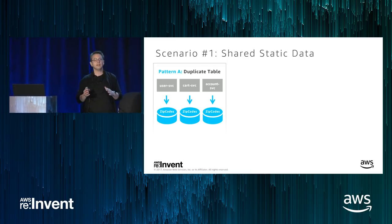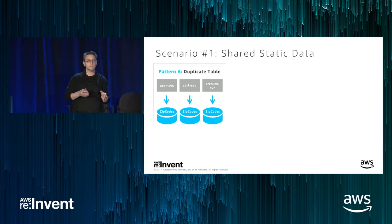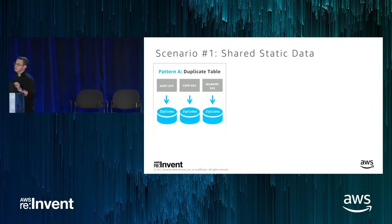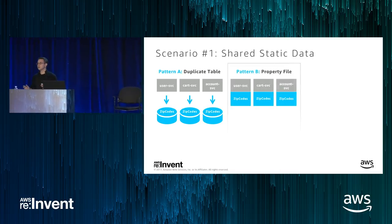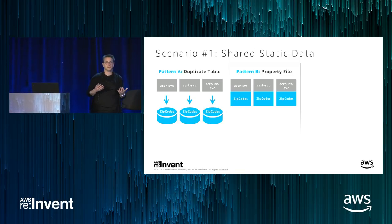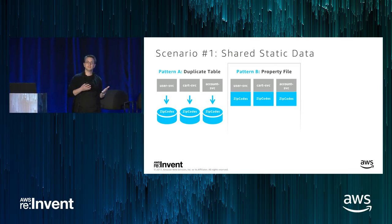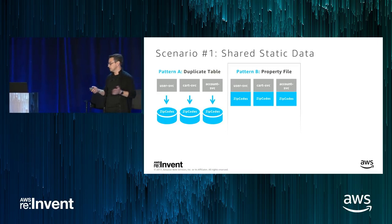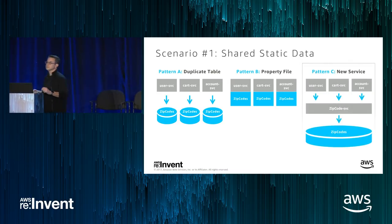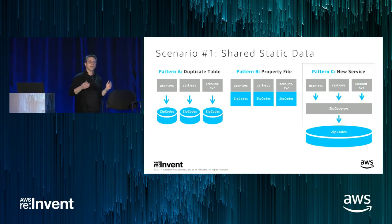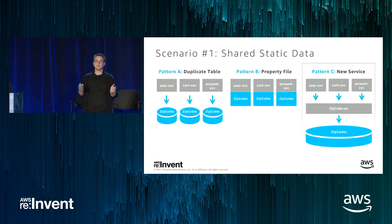The second approach is to extract that data and embed it in your code — perhaps a property file. While this doesn't fully address consistency, if you're using services like CodeDeploy and CodePipeline, it's easy to deploy code to multiple services simultaneously in production. The third approach is to create a new service out of the static data. This makes sense if the size of the data or the complexity of the logic around the data justifies it.